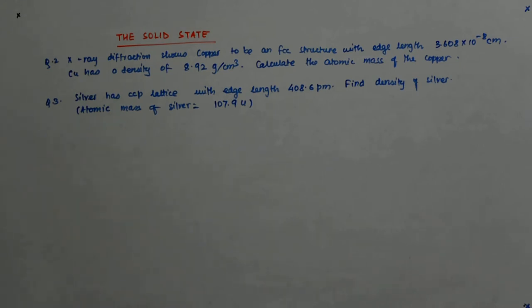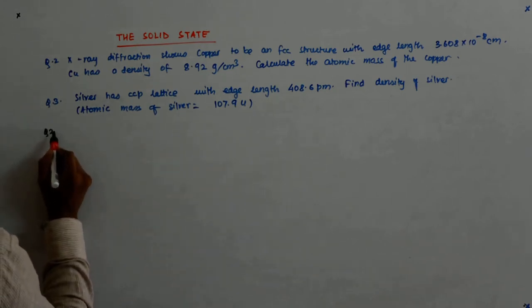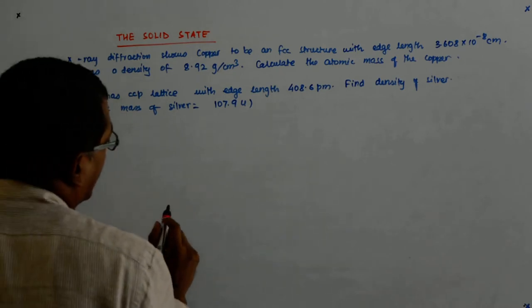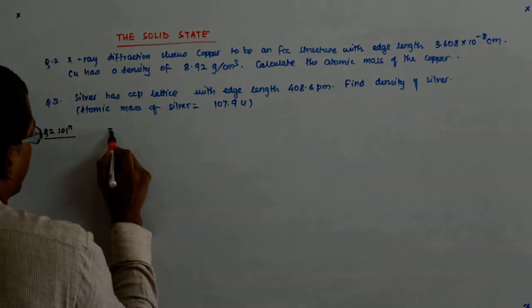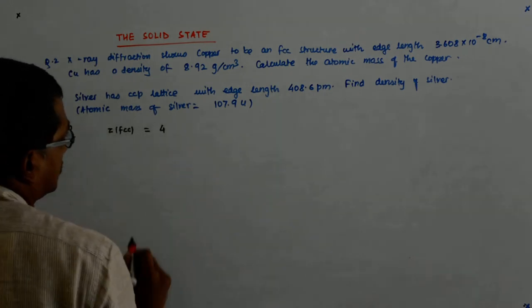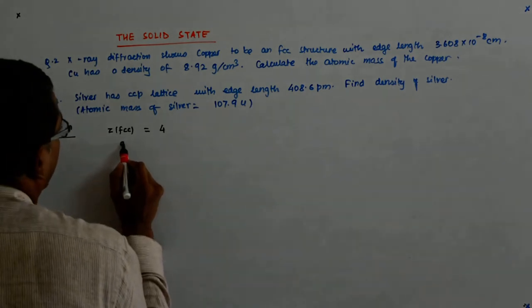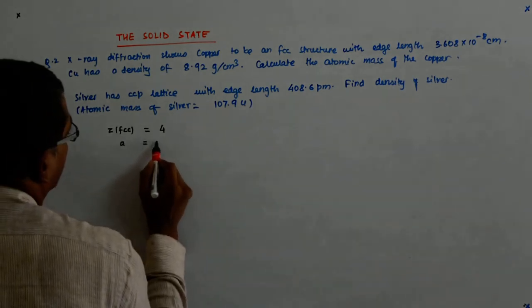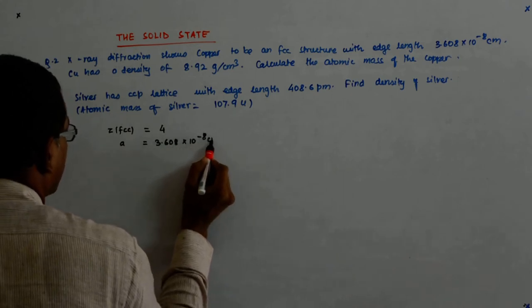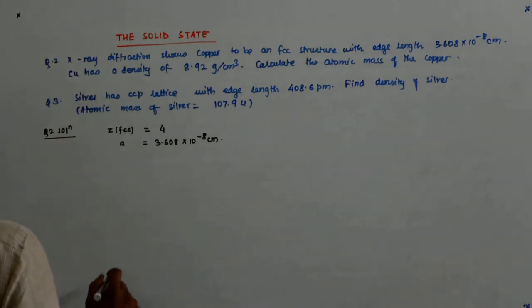Ok, so we have FCC structure. Z for FCC is equal to 4 and A is equal to 3.608 into 10 to the power minus 8 centimeter.